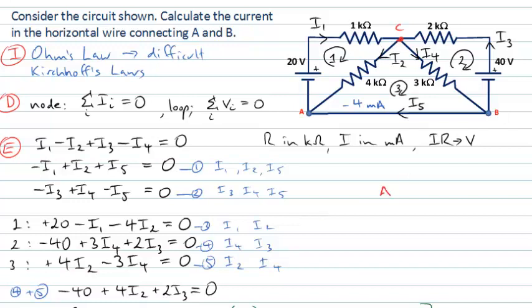We should also complete the assess stage. Strictly speaking, we should use our value for I5 and go back through our relationships to calculate I4, I3, I2 and I1. With those values in hand, we can return to the circuit and test a loop we didn't use in our calculation — for example, the rectangular loop going all the way around the outside — and verify that the loop rule is satisfied. I'll leave it as an exercise to calculate the remaining currents and confirm they satisfy all node and loop equations.